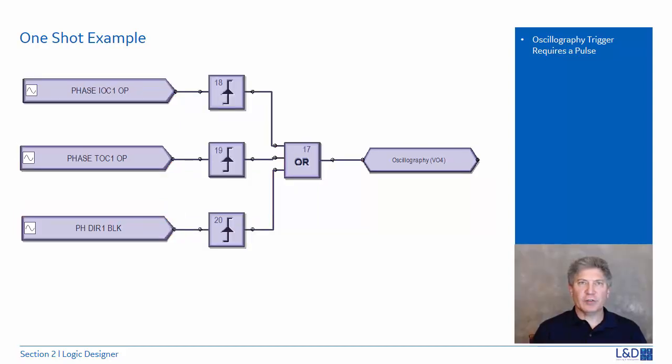Let's modify the circuit with one-shots. So if the IOC operate becomes active, it creates a short pulse to the trigger of the oscillography and the trigger is reset.